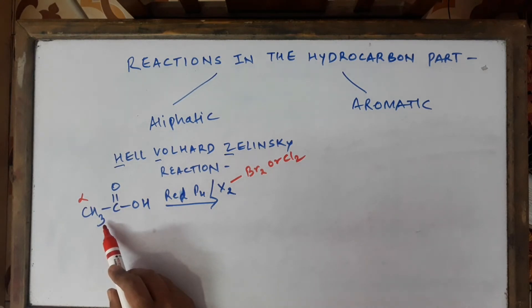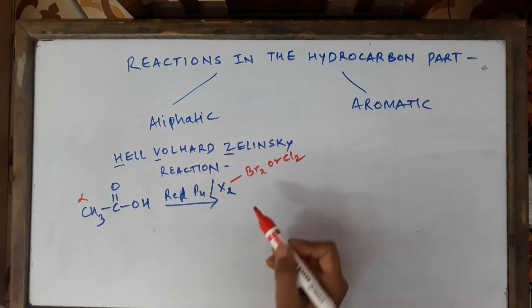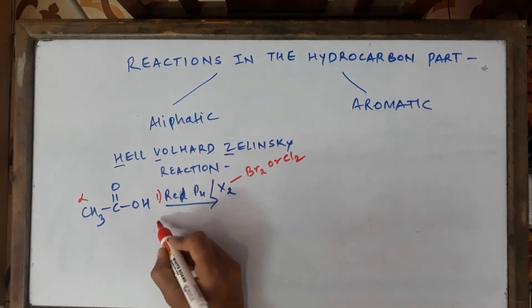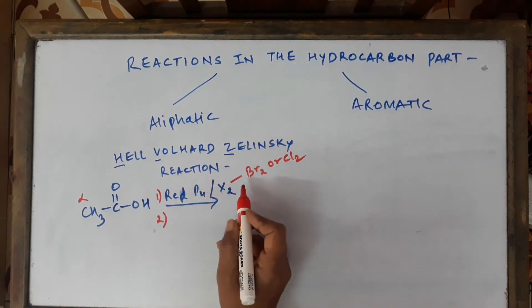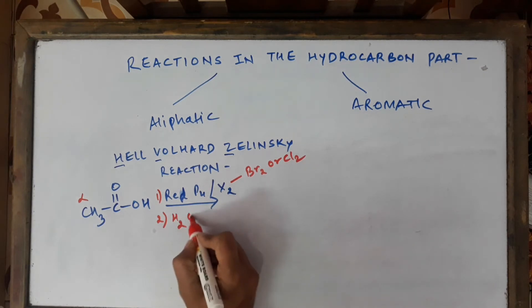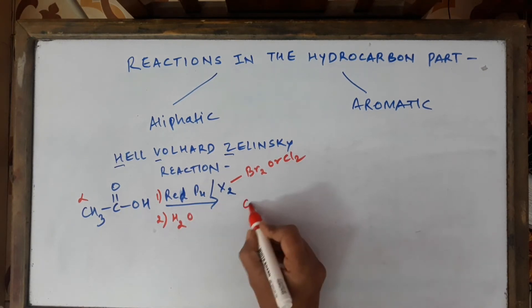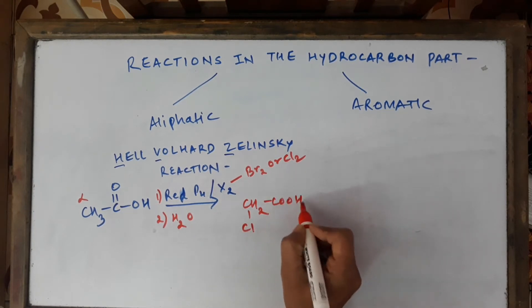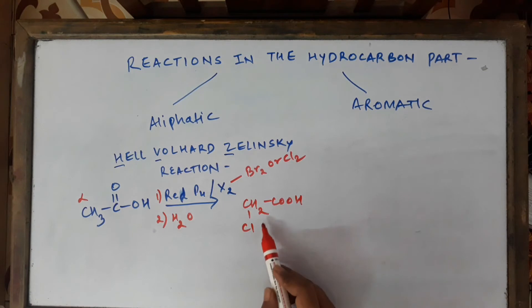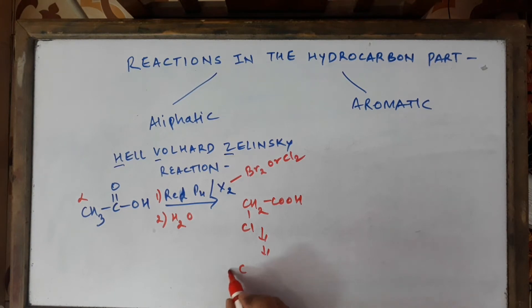In the first step we treat it with the halogenating agent, and in the second step we carry out its hydrolysis. So firstly we get CH2ClCOOH. You can see that one hydrogen has been knocked out, so we get alpha-chloroacetic acid. If we continuously carry out this process, finally we'll be getting all the three hydrogen atoms being substituted by Cl or Br, whatever you are using there.